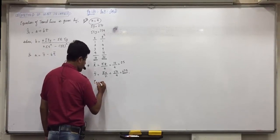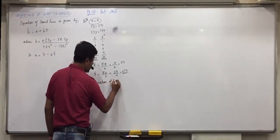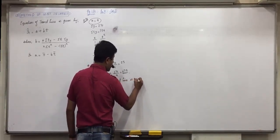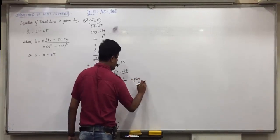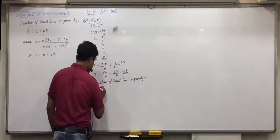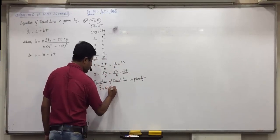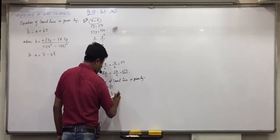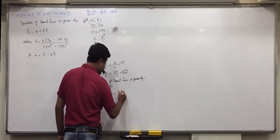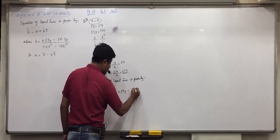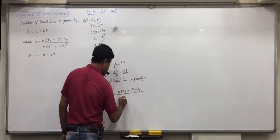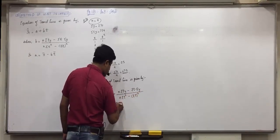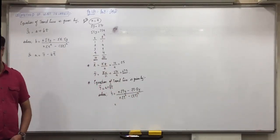Then, another? Equation of trend line is given by? Y cap is equal to a plus bt. Where b is equal to? N sigma ty minus sigma t into sigma y upon n sigma t square minus sigma t whole square. So, is everyone clear with it?